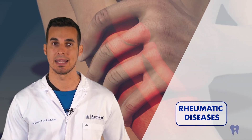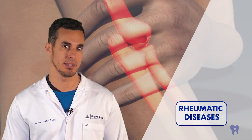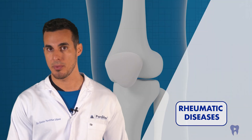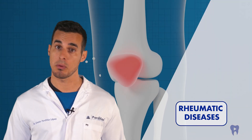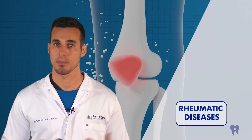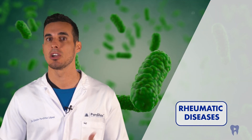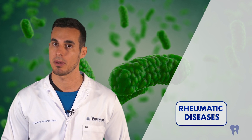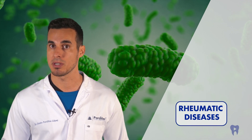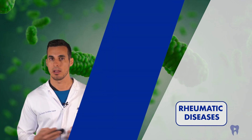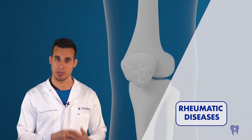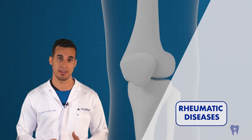Different studies have found a relationship between periodontal disease and rheumatoid arthritis. Bacteria present in the gums and the inflammatory mediators generated could induce or aggravate inflammation in the joints. For example, the bacteria Porphyromonas gingivalis, common in periodontal disease, may influence the pathogenesis of rheumatoid arthritis through processes such as citrullination. Additionally, improvement in periodontal health often correlates with a reduction in the severity of arthritis symptoms.